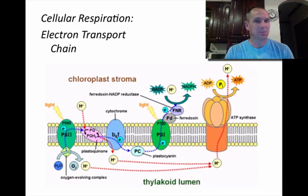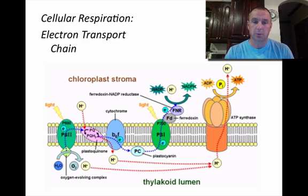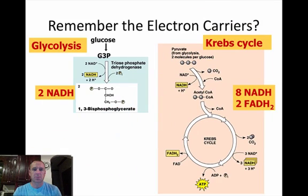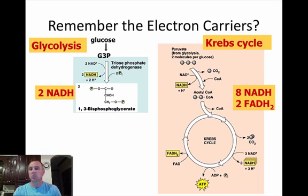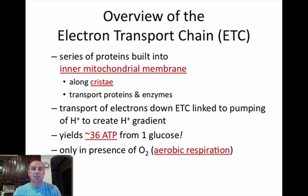Hey guys, I'm back with cellular respiration again. This time we're going to be talking about the electron transport chain, or the ETC. Just to remember a little bit about what's going on so far: we talked about glycolysis and the NADHs that were created — there were two. And we talked about the Krebs cycle, in which there were NADHs and FADH2s. Those are electron carriers. Here's where they come into importance: the electron transport chain.